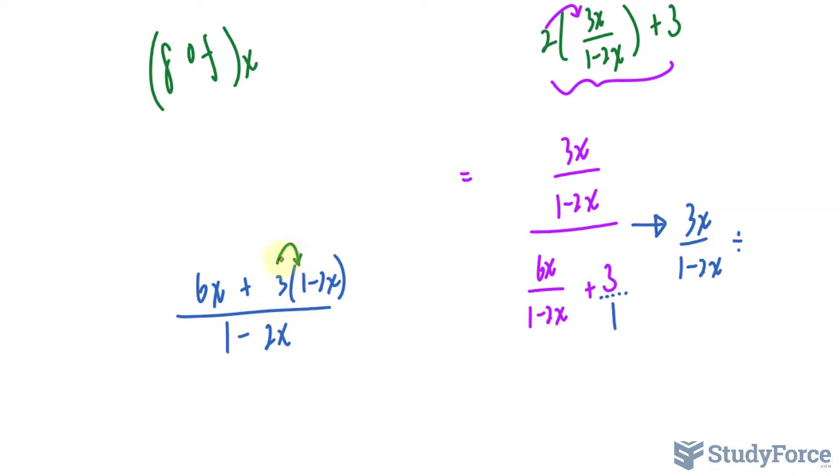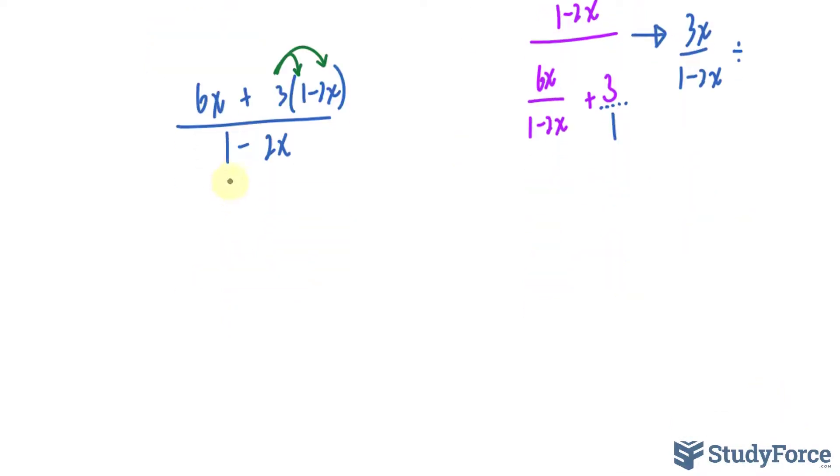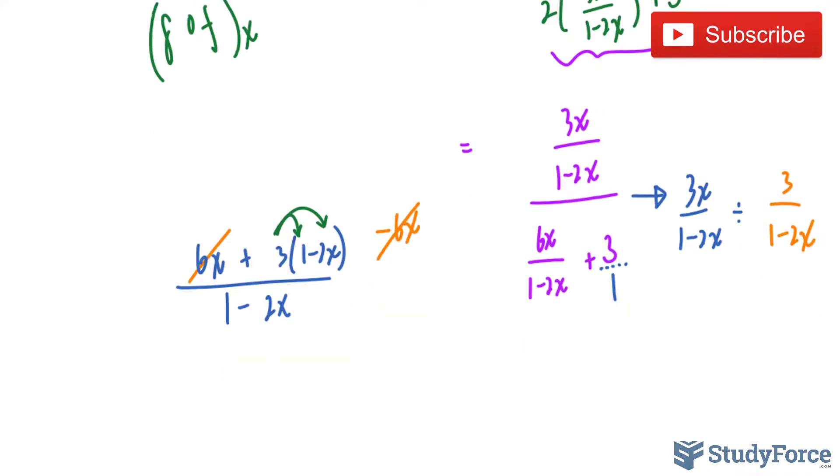I can simplify this one step further by multiplying 3 into the binomial next to it. And I get 6x plus 3 minus 6x. That's actually quite good for us because that's negative 6x, and that cancels out with that. So we actually have a simpler fraction underneath. It's 3 over 1 minus 2x.